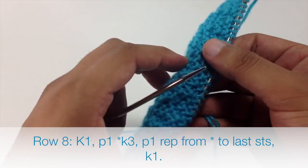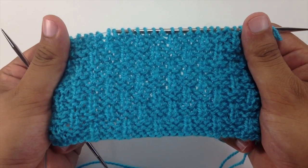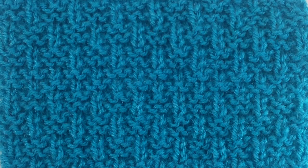So we are going to repeat rows 1 through 8 until you have reached your desired length. And that is how you knit the double basket weave stitch. After a few repeats your pattern should look like this.